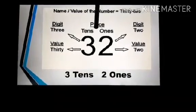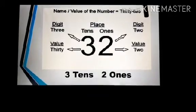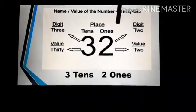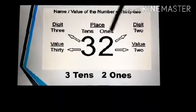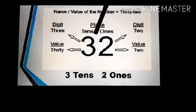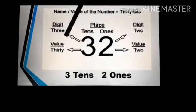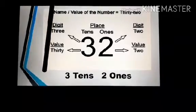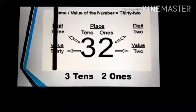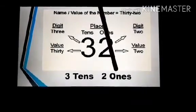In 32, digit 2 is at 1s place so the value of 2 is 2. While digit 3 is at 10s place so the value of 3 is 30. There is three 10s and two 1s in 32.